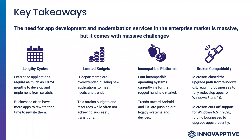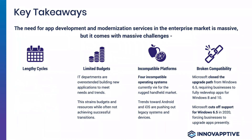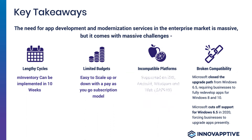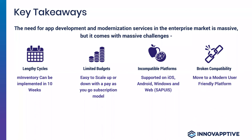Key takeaways — you don't have to stick with lengthy cycles when implementing such a solution. The M-Inventory solution can be implemented in about 10 weeks. You don't need a deep investment in development. It's easy to scale with a pay-as-you-go subscription model. You don't have to support multiple platforms as an IT organization — we provide out-of-the-box coverage and support for iOS, Android, Windows, or Web. And you don't have to worry about broken compatibility, because moving to a more user-friendly platform, you get a partner in Innovaptive that can support you for the long haul — providing an out-of-the-box, simple-to-use solution that can be implemented fast and integrated in an agile way into your enterprise application stack.